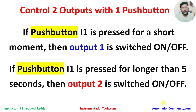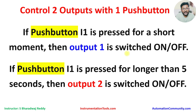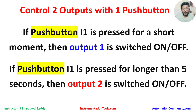Here there are two outputs and one input. We have to control two outputs with one push button. If the push button is pressed and released immediately, then output one will toggle on or off. If output one is in off state it will go to on state. For every press and release, output one changes its state — on to off or off to on.